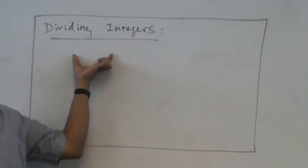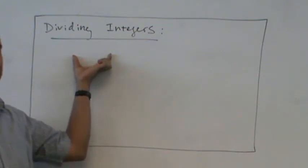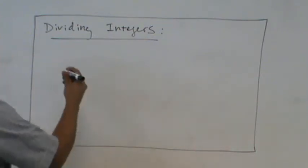So the rules for dividing integers are very similar. In fact, they're the same for multiplying integers. So what were the rules?